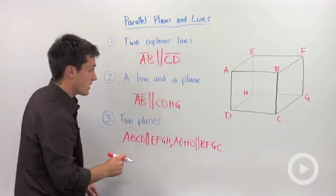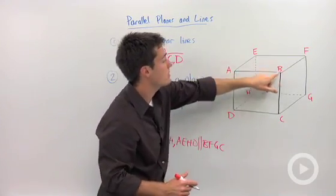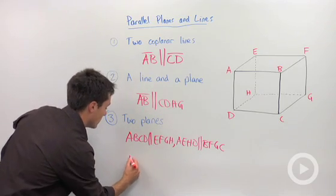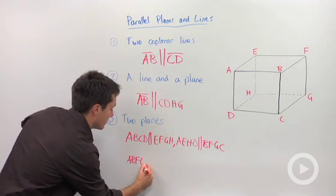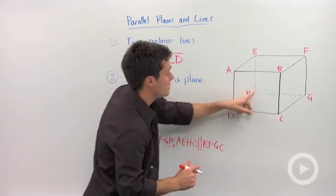And last, we could say our two bottom faces, or the top and the bottom face. So we have ABFE is parallel to this bottom face, which is CDHG.